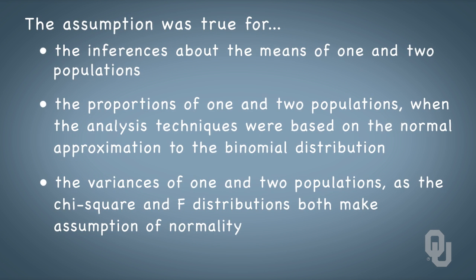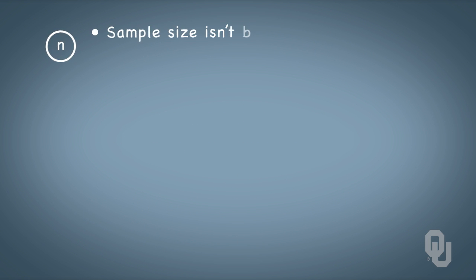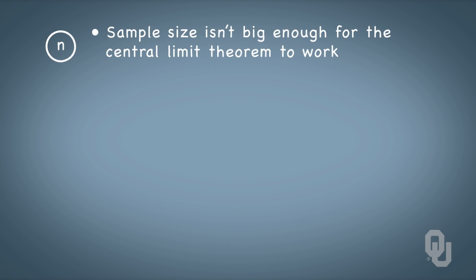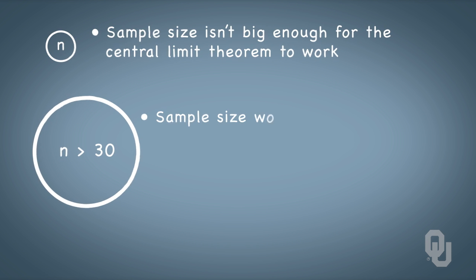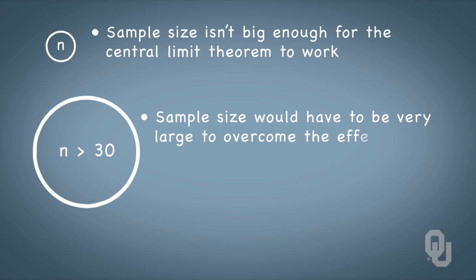But sometimes we just can't assume normality. Maybe the sample size just isn't big enough for the central limit theorem to work. That could be because we simply can't collect a large enough sample — say because it's too expensive or too time consuming to sample — or because the population distribution is such that we'd have to collect a really large sample, bigger than the magic number of 30, to overcome the effects of non-normality in the population.